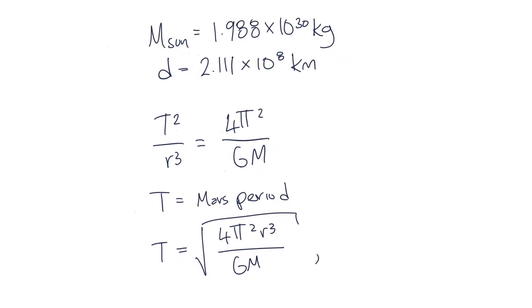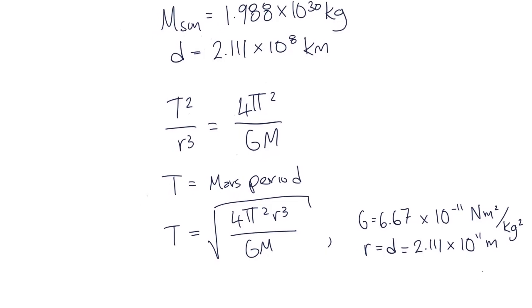We know that big G is equal to the universal constant of gravitation. We know that r is equal to d is equal to 2.111 times 10 to the 8 kilometers, or 2.111 times 10 to the 11 meters. And we know that the mass of the Sun, which is the mass that is being orbited, is 1.988 times 10 to the 30 kilograms. Let's plug in these numbers.